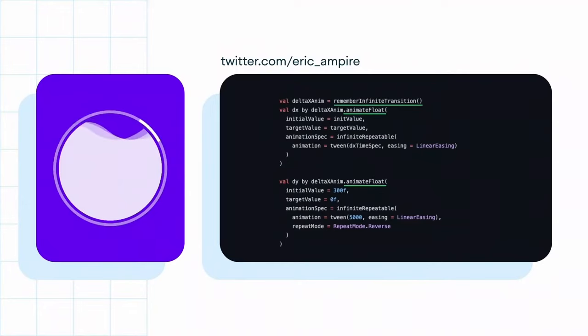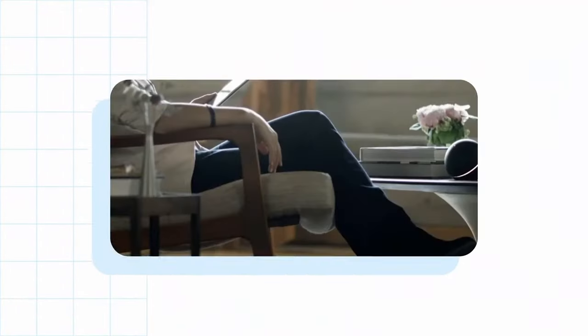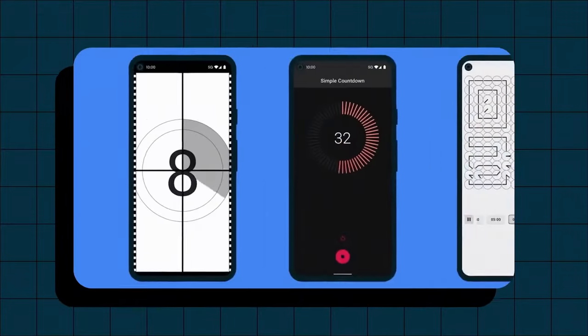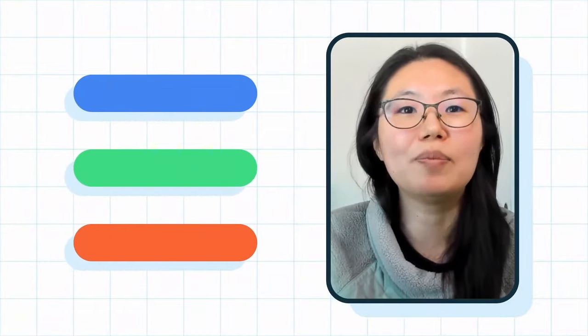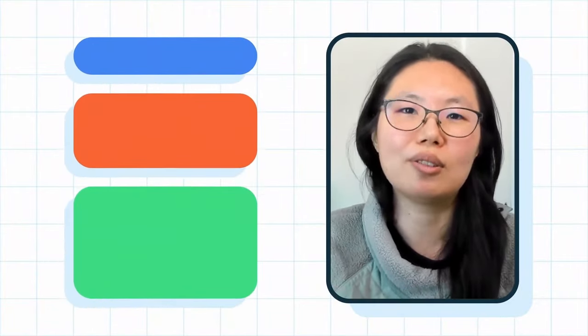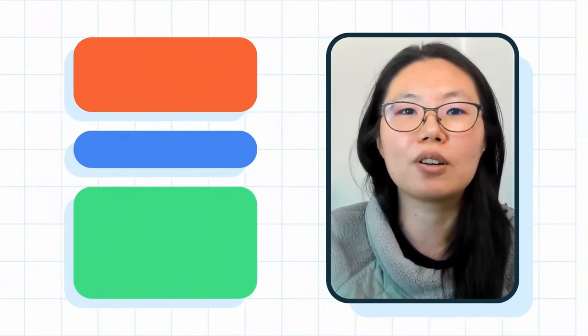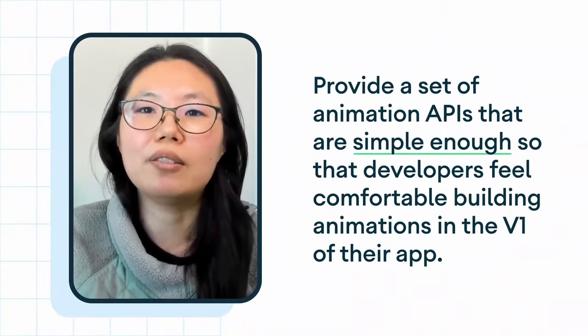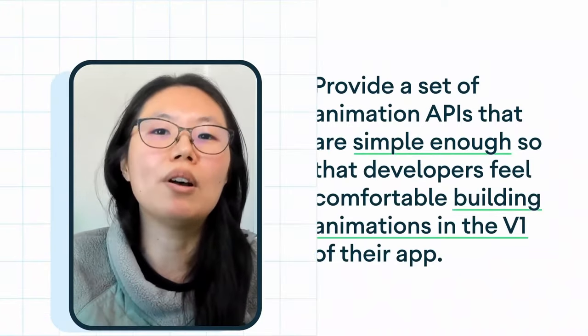Many Compose animation APIs are available as composable functions, just like layouts or other UI elements, and they are backed by lower-level APIs built with Kotlin coroutine suspend functions. To understand more about the beauty and power behind an animation, I spoke with my friend Doris Liu, the engineer on the Compose team who builds all of the animations you can find there. Prior to Jetpack Compose, we noticed that developers were fairly intimidated by building animations — they would first build everything in their app except the animations, and then later go back and add them when they had time.